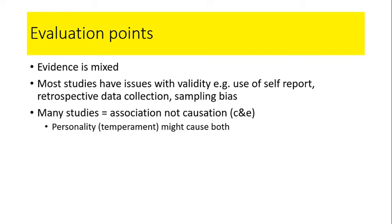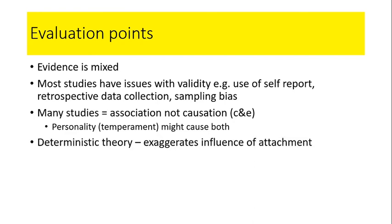If you think back to when we looked at correlations, we talked about a third hidden factor that might cause a change in both things. A nice example here is personality — if someone has quite a warm, sunny personality, that might cause them to have a good attachment with their parents and also cause them to have good relationships when they're older. Equally, someone with quite a stressy, nervy personality might end up with an insecure attachment and also have problems later on in their relationships. So it might be personality causing both outcomes.